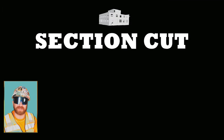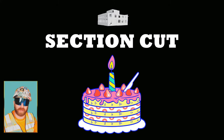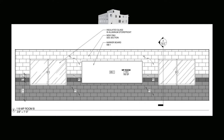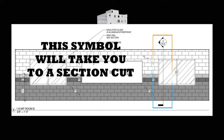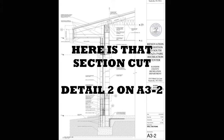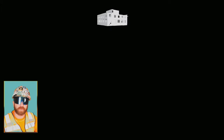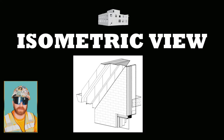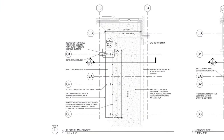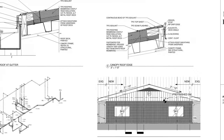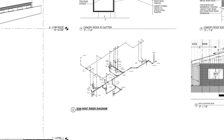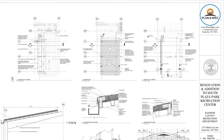The third type of detail is the section cut. Imagine taking a knife and slicing through a cake and removing half — you're left with the layers of the cake that you can see. You do the same thing with a building: you slice through it and look in a particular direction. The fourth type is an isometric view, which gives you a 3D image of a certain aspect of the building. Here are examples of all four: a plan view detail, an elevation view, a section cut, and an isometric detail.